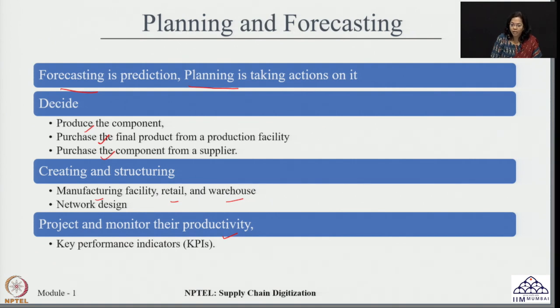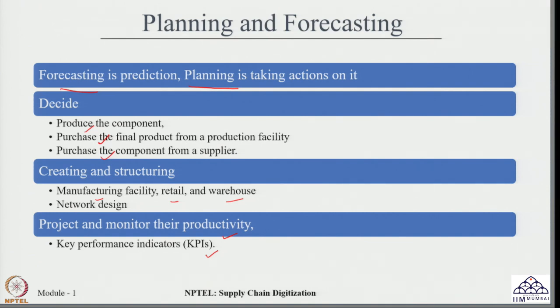For this purpose, we need to define some KPIs — key performance indicators — which need to be monitored on a regular basis to see that all the processes involved with planning activities are done in the most effective manner. KPIs are an important way of ensuring that process monitoring is done effectively. We can define different KPIs for planning and forecasting.